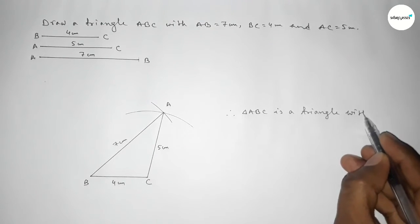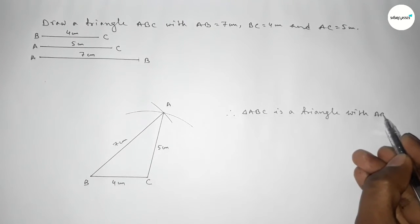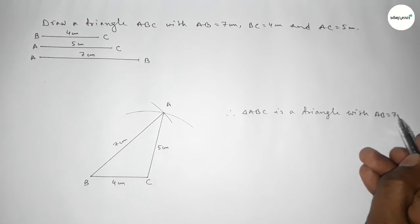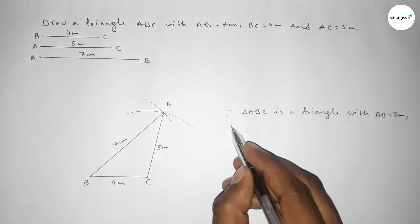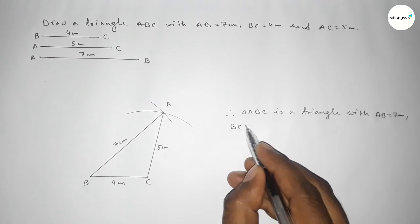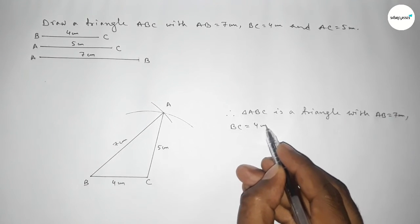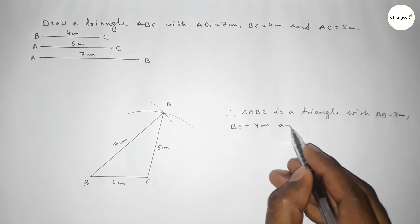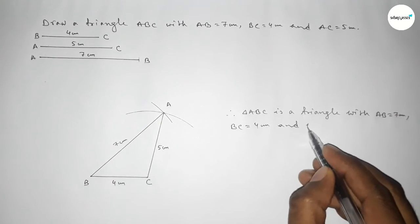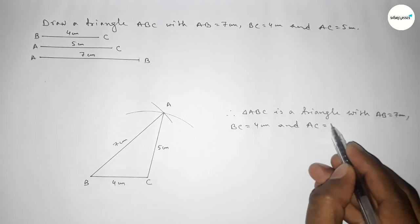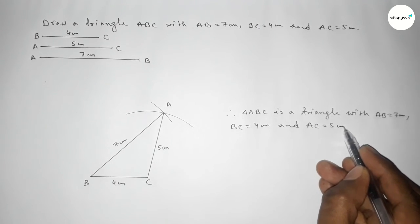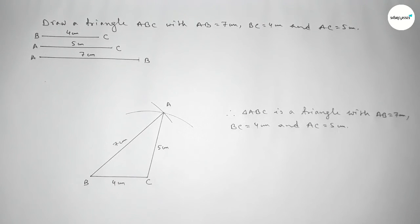Therefore triangle ABC is constructed with AB equal to 7 centimeters, BC equal to 4 centimeters, and AC equal to 5 centimeters. That's all — thanks for watching. If this video is helpful to you, please share it with your friends.